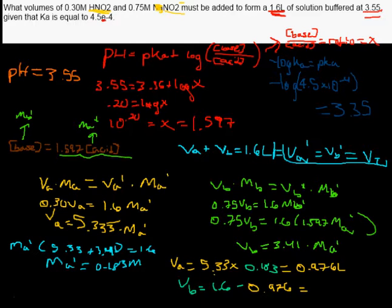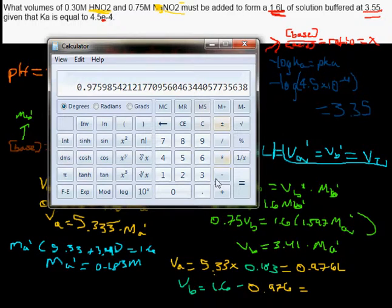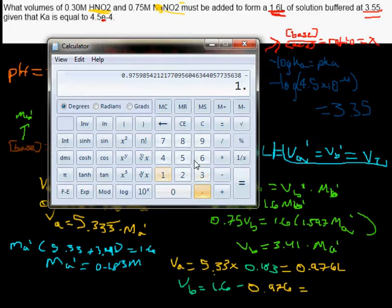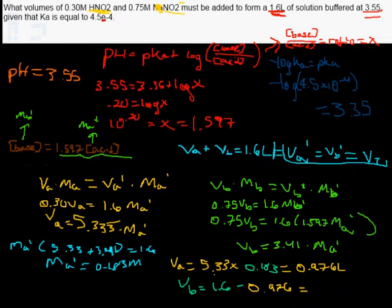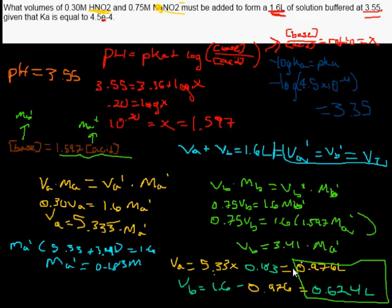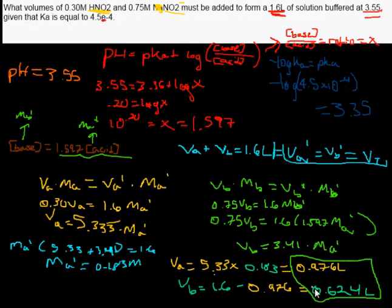Which equals, drumroll please. I'm just going to do minus 1.6 and then take the 0.96, not, 0.624 liters. I don't know, got this number on the brain now. 2, 4. So there we have it. We now have the answer to this problem right here. It is 0.976 liters of the acid and 0.624 liters of the base.